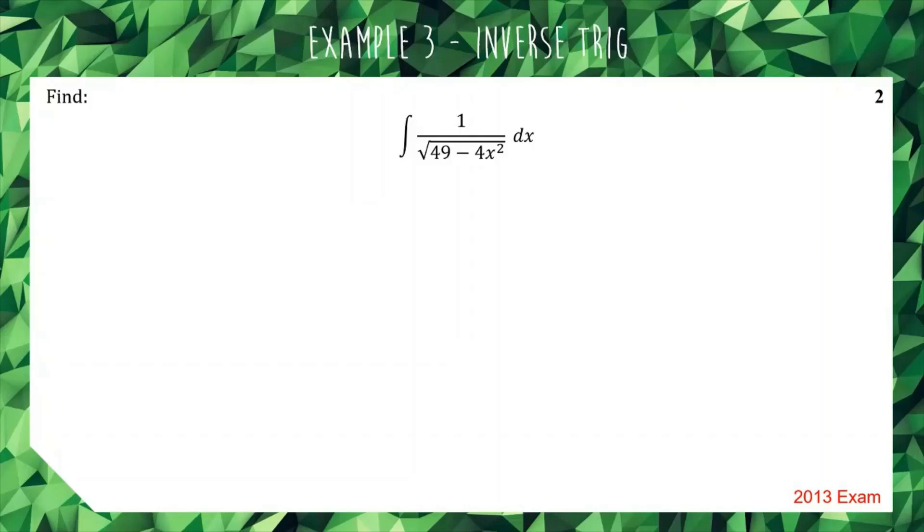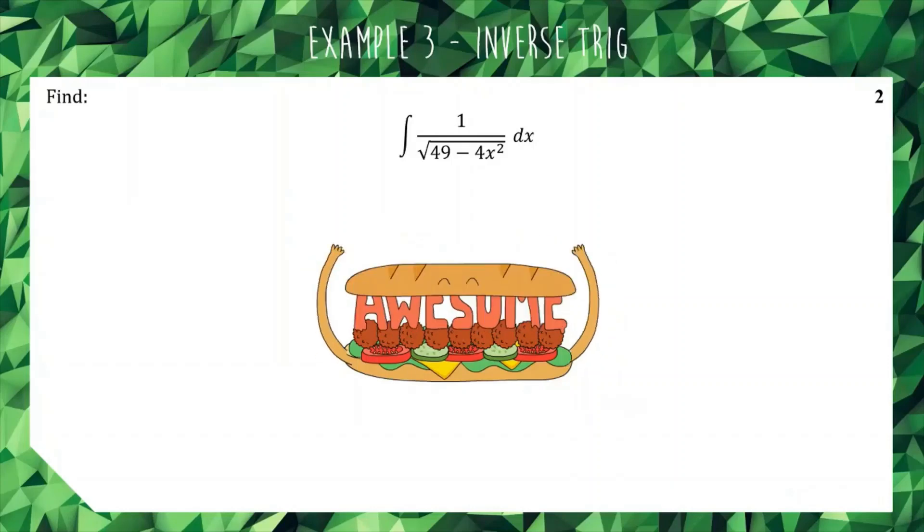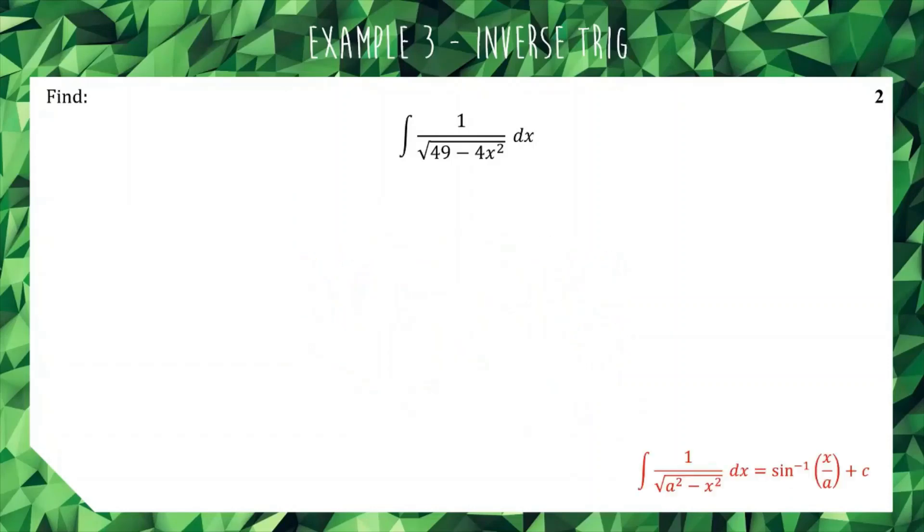There's a couple of ways you can do this question. The way we did these in class is we did a pretty awesome substitution that makes the question a lot easier. We looked at the question and said, well, if we compare it to our standard integral, the inverse sine, which looks like 1 over square root of a² - x², it would be much more convenient if instead of having 4x² here, we had just x² or just something squared.